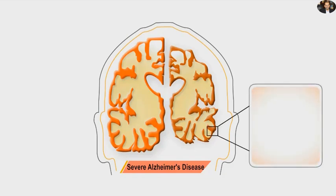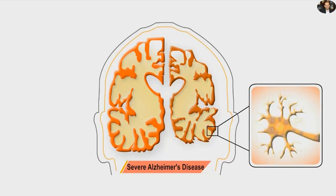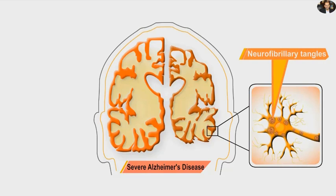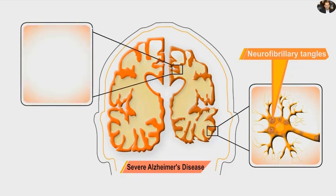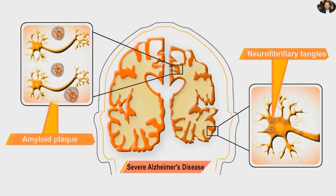There are two important findings in the brain of patients with Alzheimer disease: the neurofibrillary tangles inside the nerve cells and amyloid plaques between nerve cells.